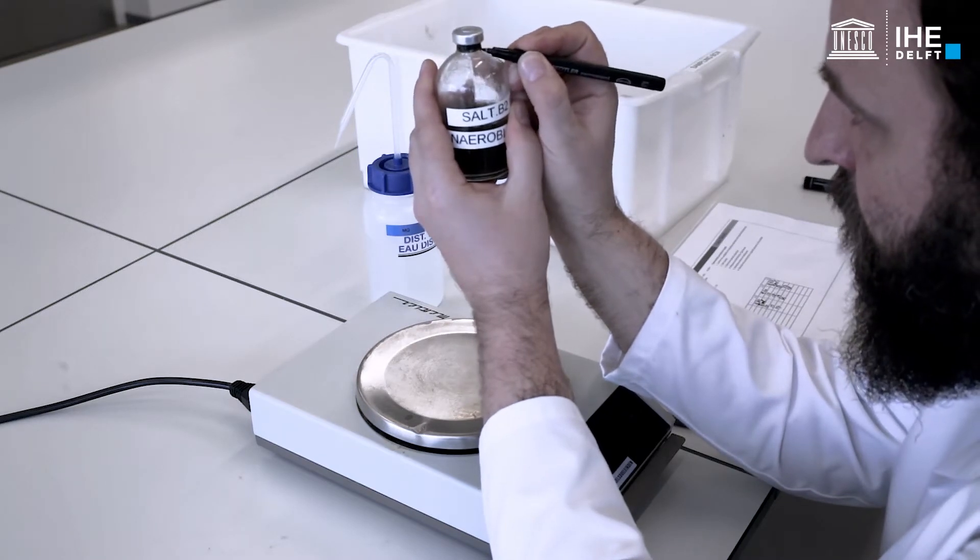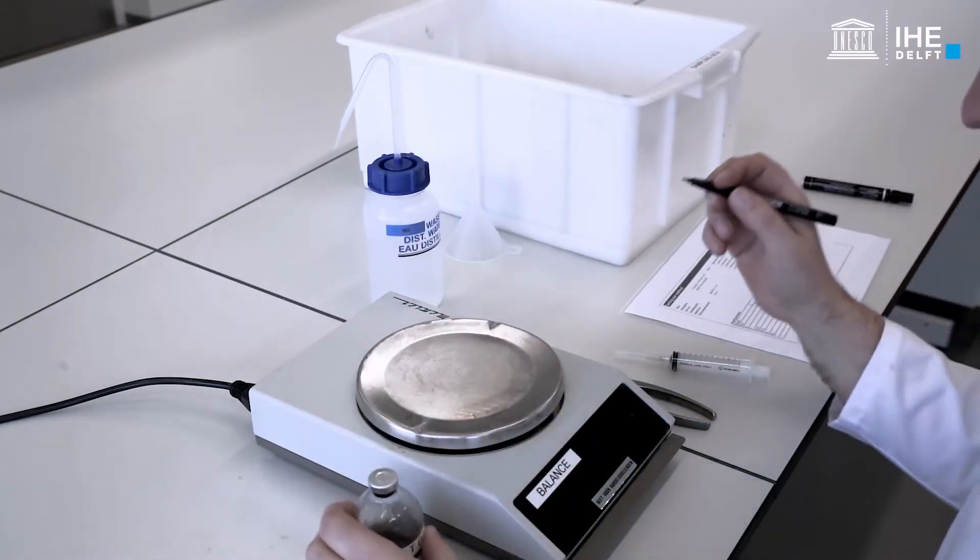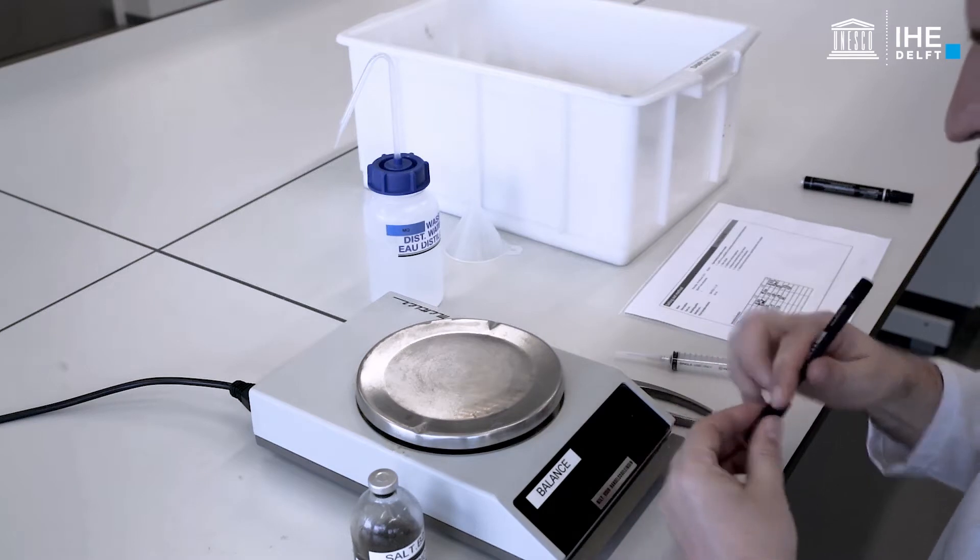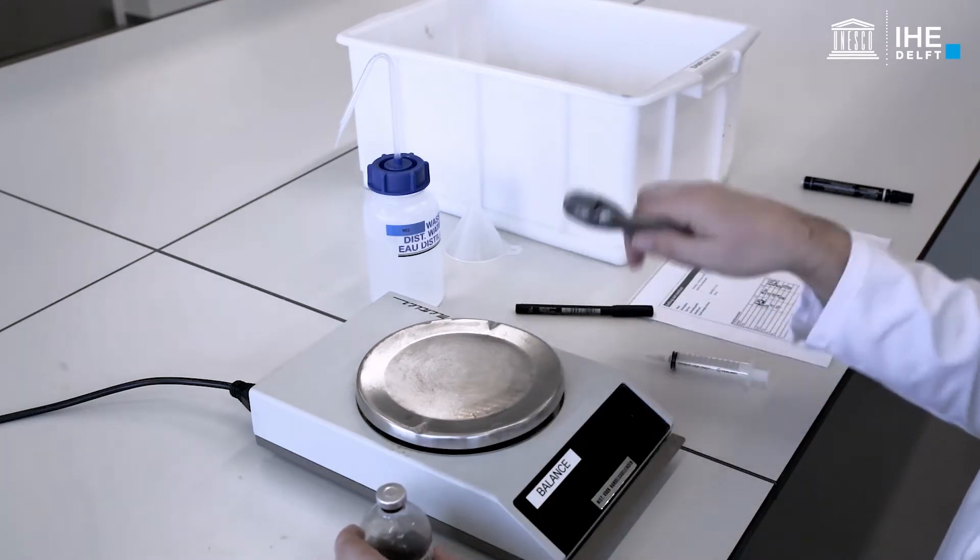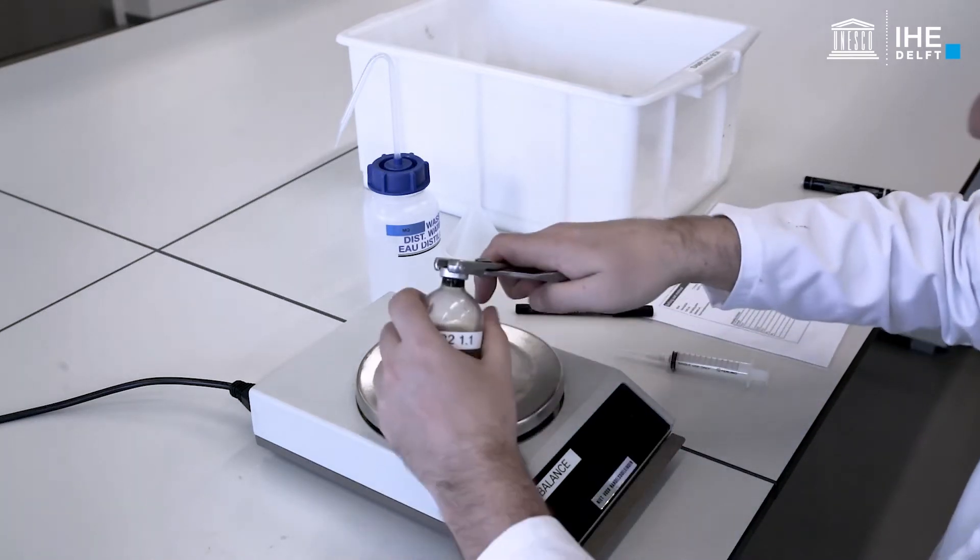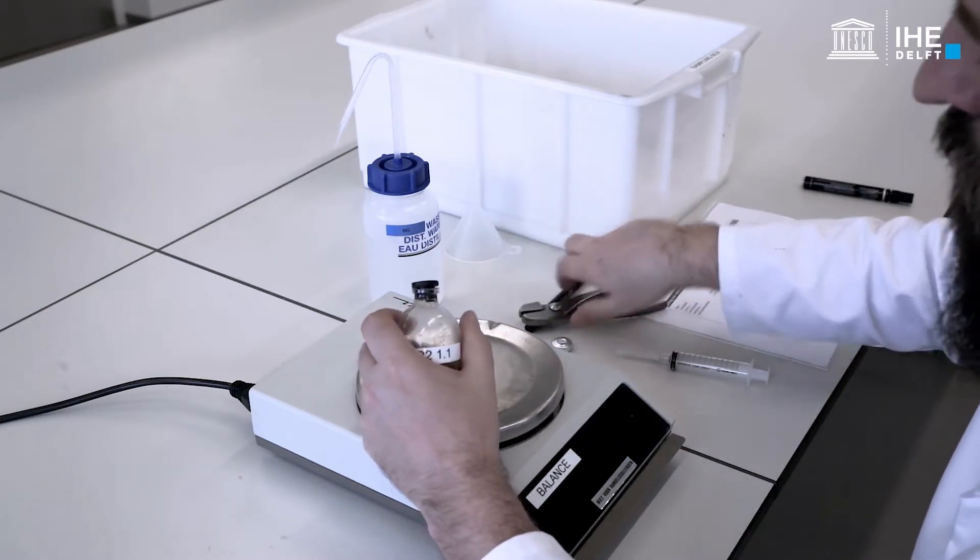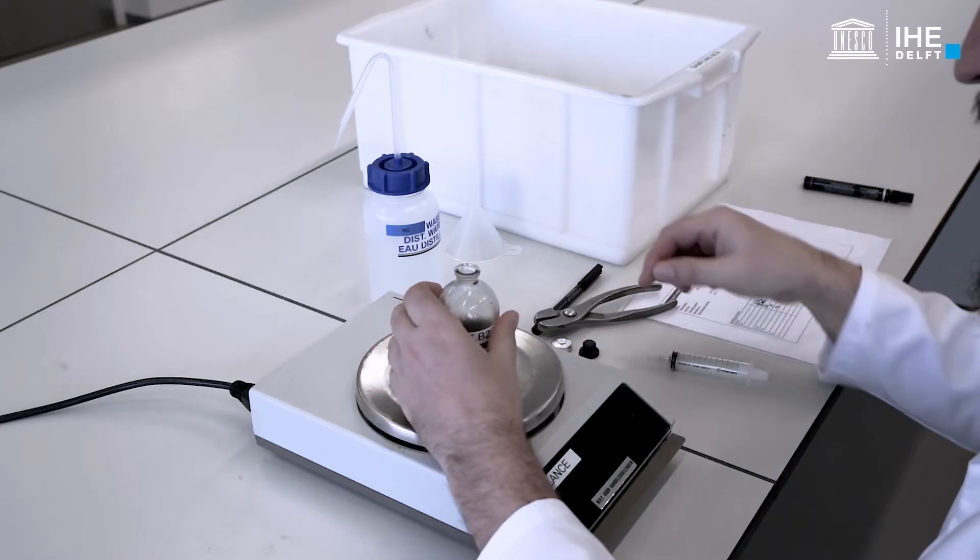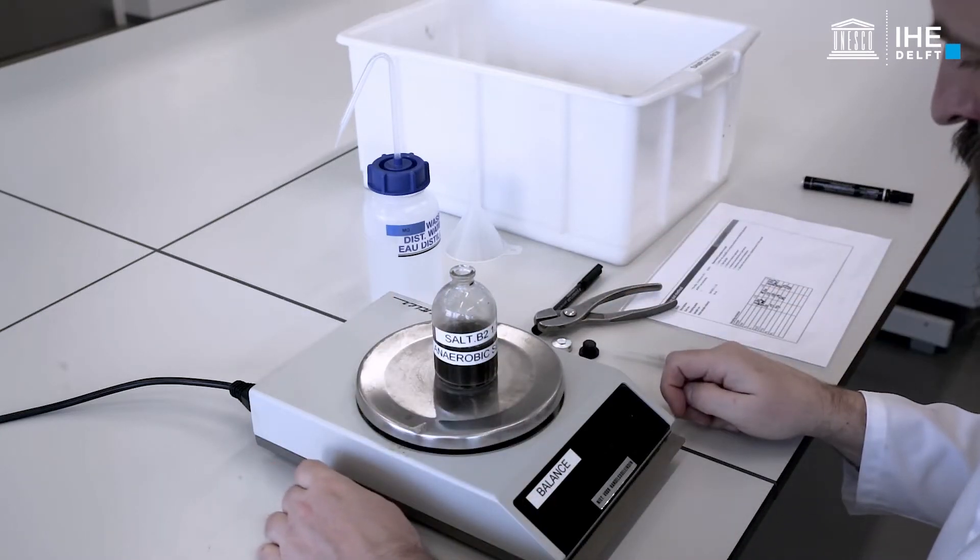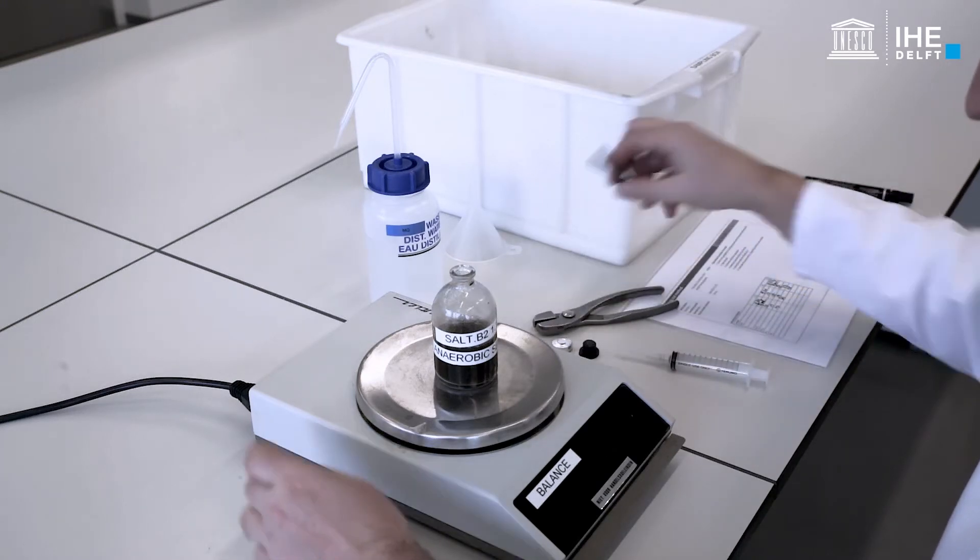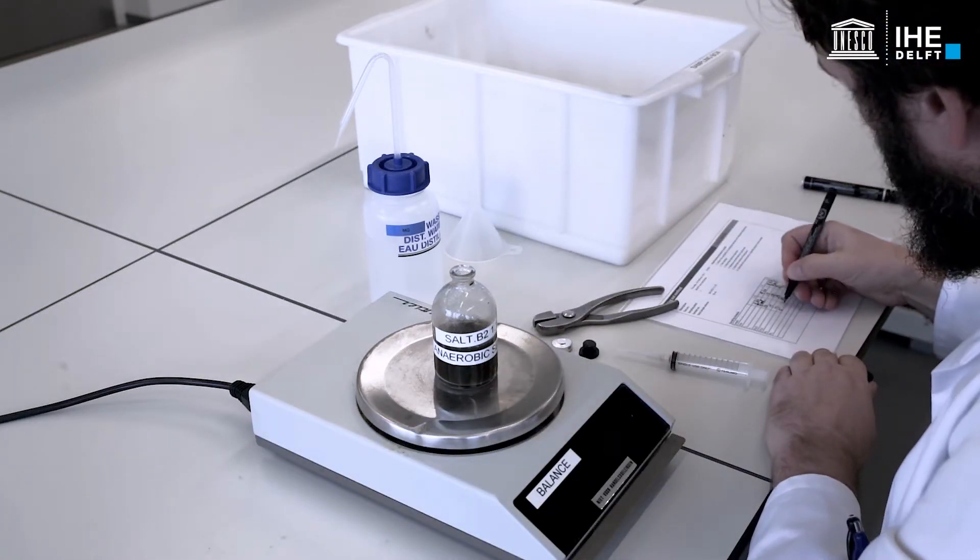Finally, the volume of the headspace of the serum bottle needs to be determined. For this purpose, the water level of the salt saturated sample and the lowest level occupied by the rubber stopper are marked. The weight of the bottle is registered as weight zero.